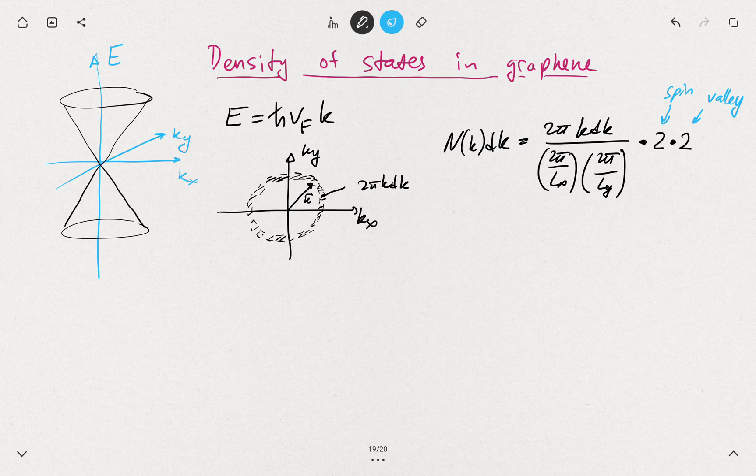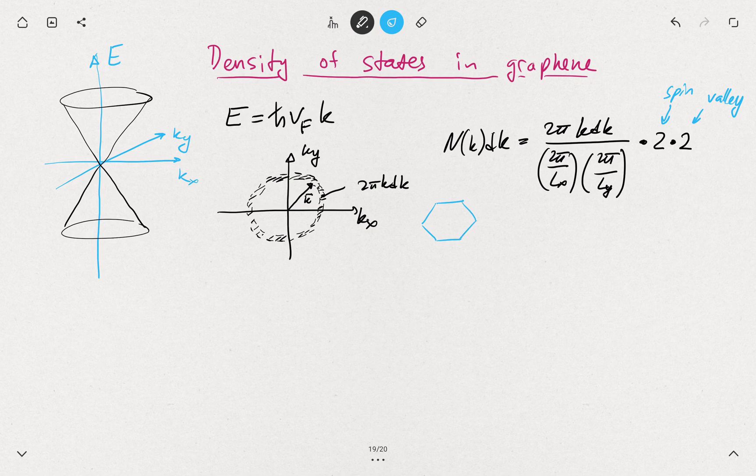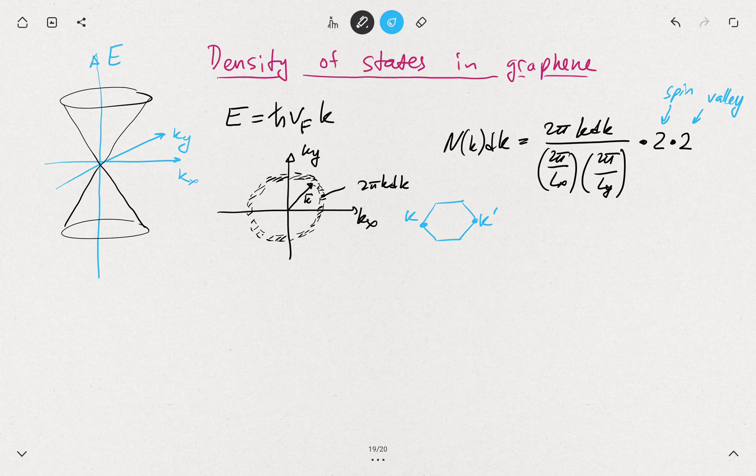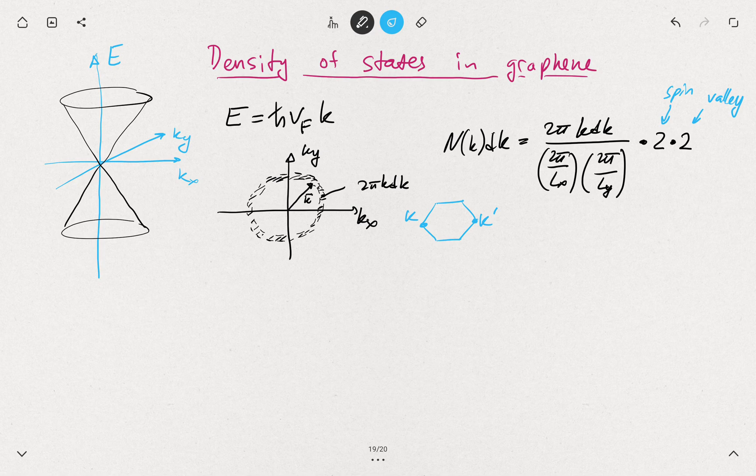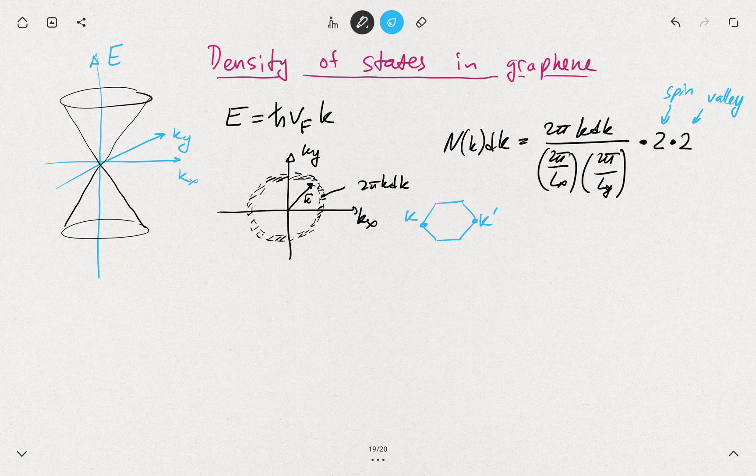When we were talking about the first Brillouin zone in graphene, we were discussing that you have this K and K prime. Those are different valleys, because of the properties of the two-component wave function. They are independent, you have to count them separately. Those are as good quantum properties as spin in graphene.